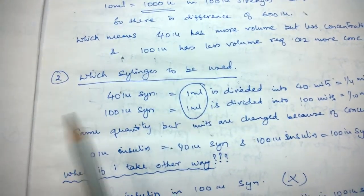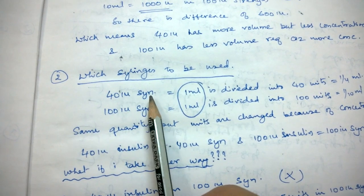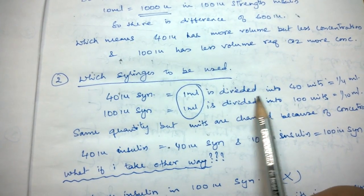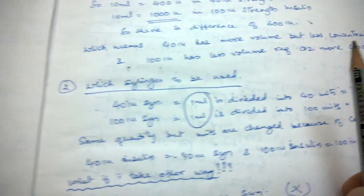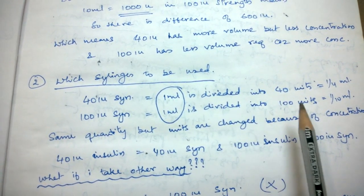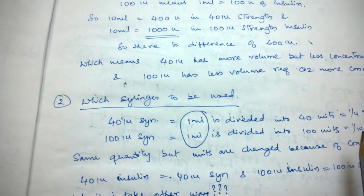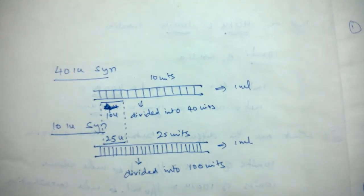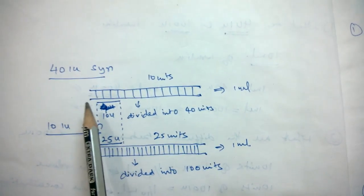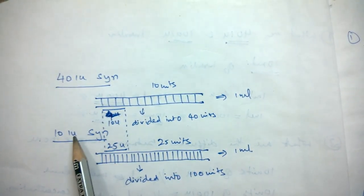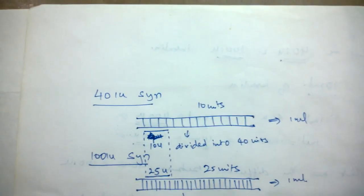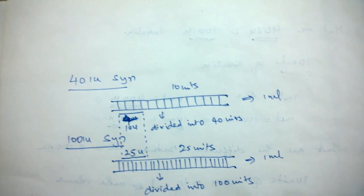When you are using a 40 international unit syringe, 1 ml is divided into 40 units — that is one-fourth ml per unit. For a 100 international unit syringe, 1 ml is divided into 100 units — that is one-tenth ml per unit. As shown in the diagram, both the 40 IU and 100 IU syringes hold the same total volume of 1 ml.